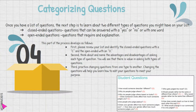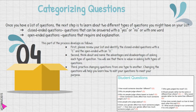Step 4: students will improve, discuss, change, and prioritize their questions. This step helps students do high-level work with their questions and identify how different types of questions elicit different types of answers and information.